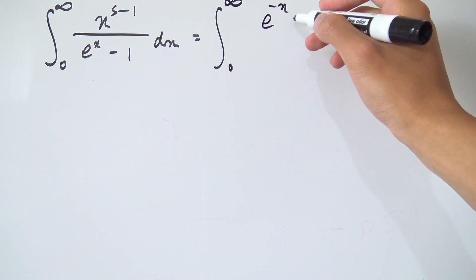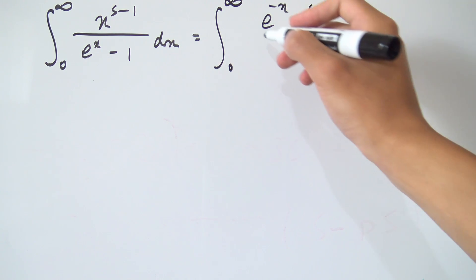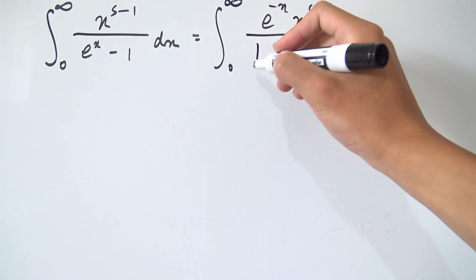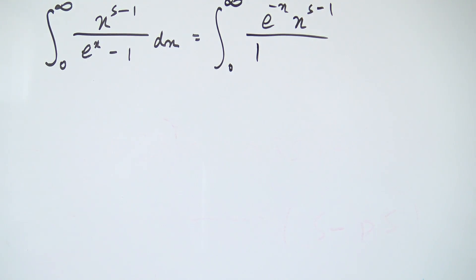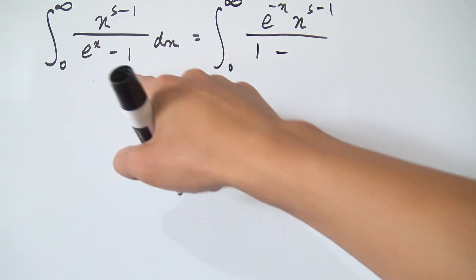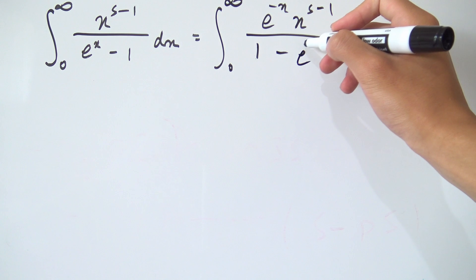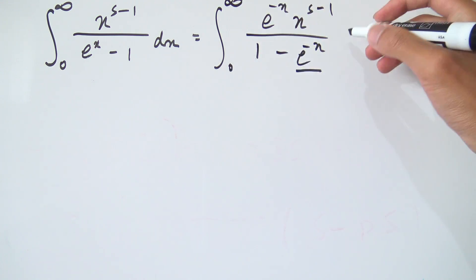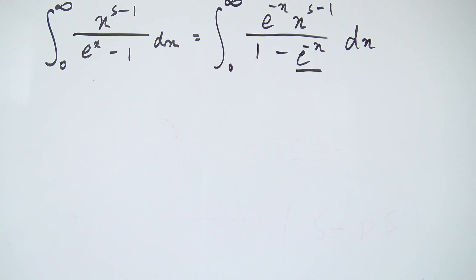If we do so, we're going to get e to the minus x times x to the s minus 1 on the top. On the bottom, multiplying e to the x by e to the minus x gives 1, since x minus x in the exponent is 0. Then we still have minus e to the negative x. This is nice because e to the negative x is always between 0 and 1 on this interval, so our geometric series will converge since our r is always between negative 1 and 1.